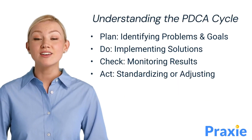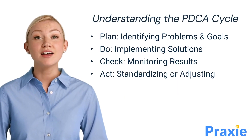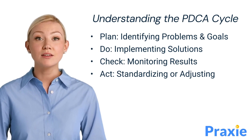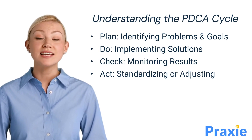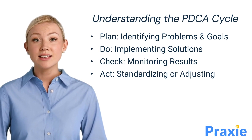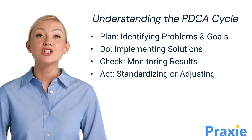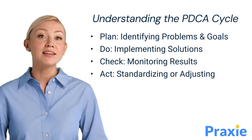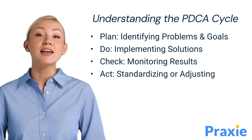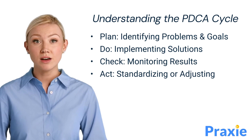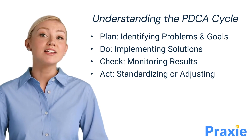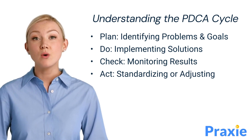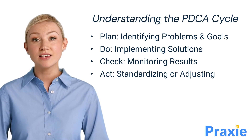The PDCA cycle is a systematic approach to problem solving. It starts with planning, where problems are identified and goals are set. The next step is to do, where solutions are implemented. After that, the check phase involves monitoring and measuring the outcomes. Finally, ACT involves either standardizing successful solutions or making necessary adjustments.